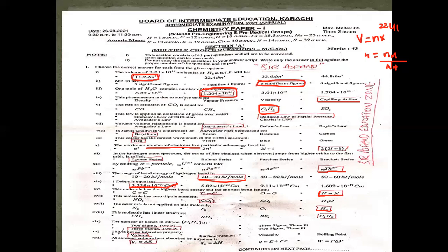This is not an intensive property — it is an extensive property. Volume is constant. At constant volume, the heat absorbed by a system equals the internal energy change, so Q = ΔE.